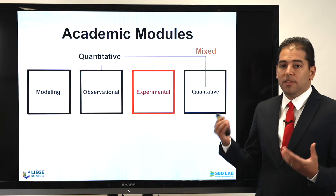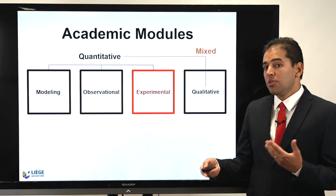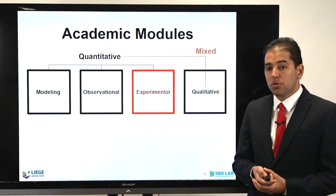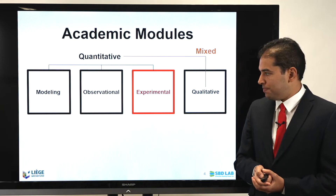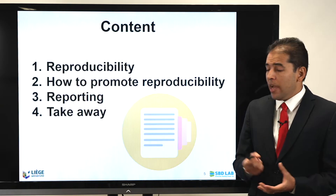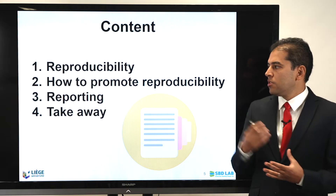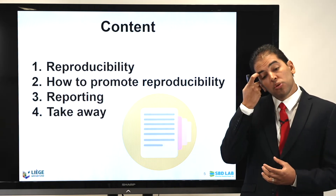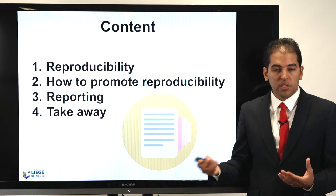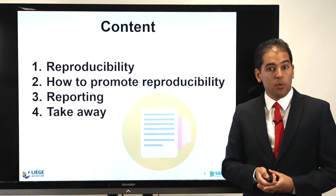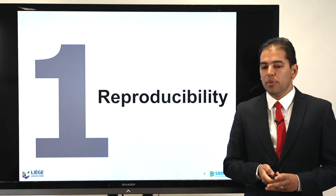We are in the series on experimental research where we started earlier to talk about the different techniques about experimental research. The content of this presentation will introduce reproducibility, how to promote it and how to plan it in your work, how to report it, and finally some takeaway messages. So let's start with reproducibility.